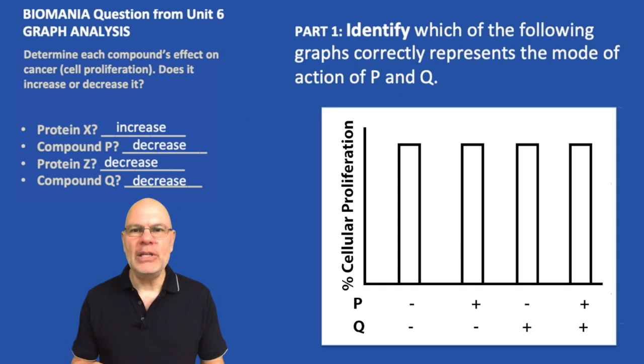The y-axis on these graphs is the percentage of cell proliferation. There's no units on this, but basically it's is there more or is there less? If there's a minus sign next to the row that follows P, that means that compound P isn't present. If there's a plus sign, then compound P is present. And it's the same thing for Q.